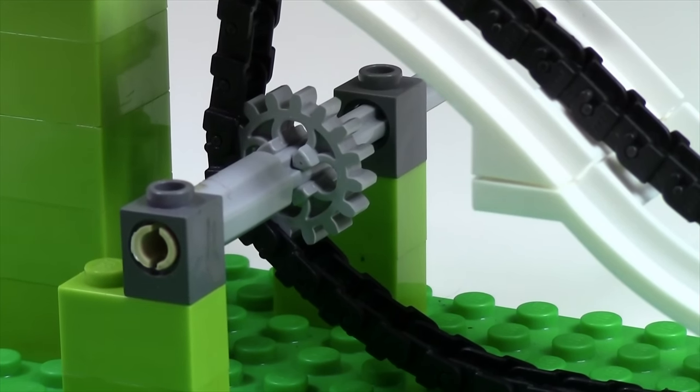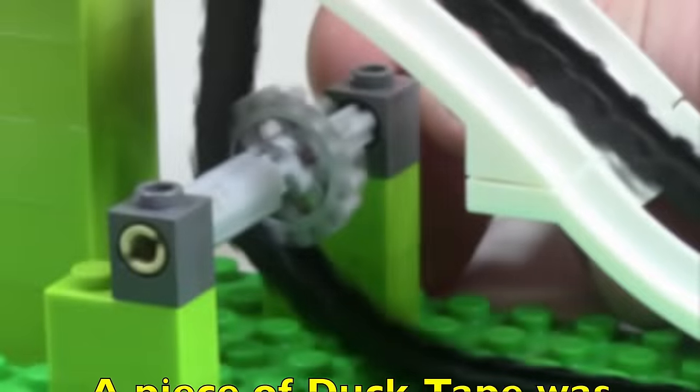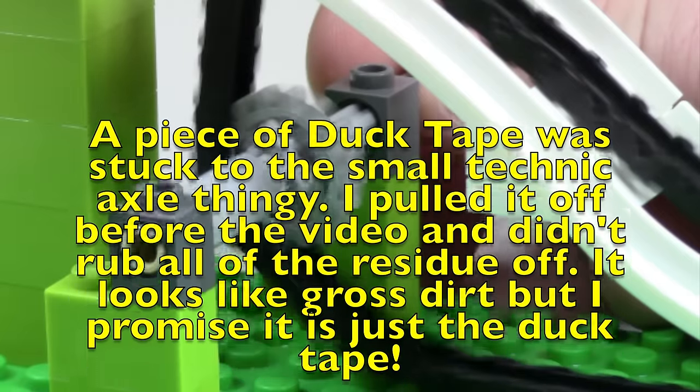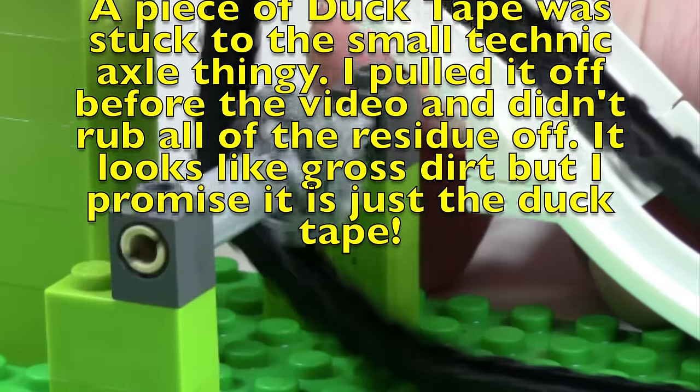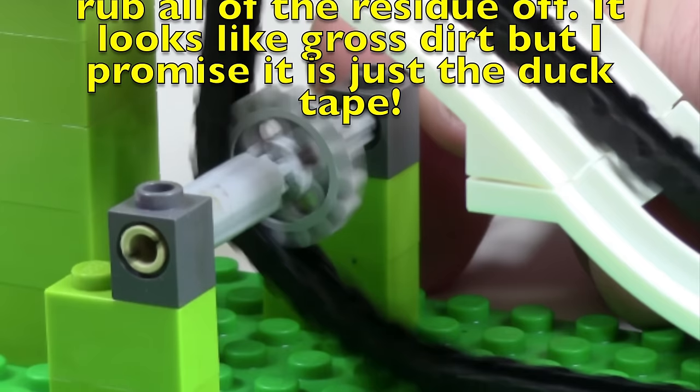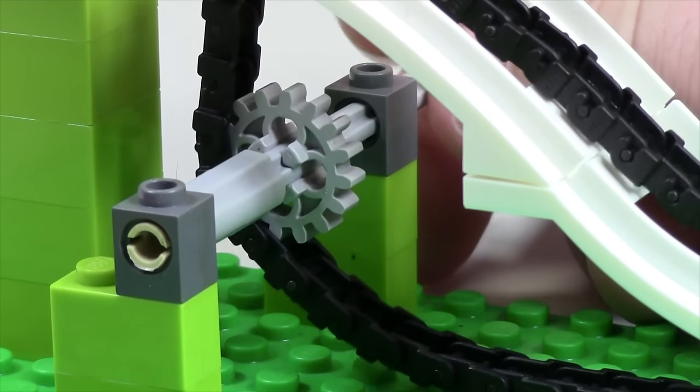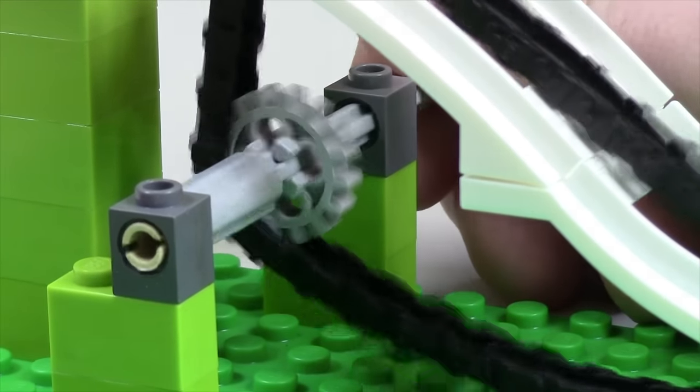Over here, here's the little mechanism that I have built to pull the roller coaster up to make it work. It is so simple, all you need to do is turn the axle piece, the gear moves, and it pulls the chain links with them.